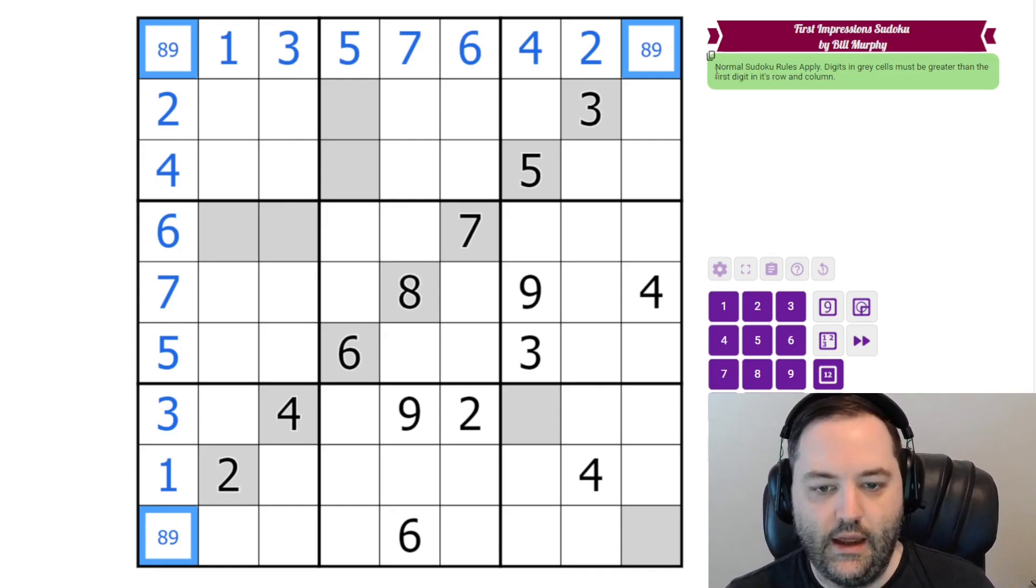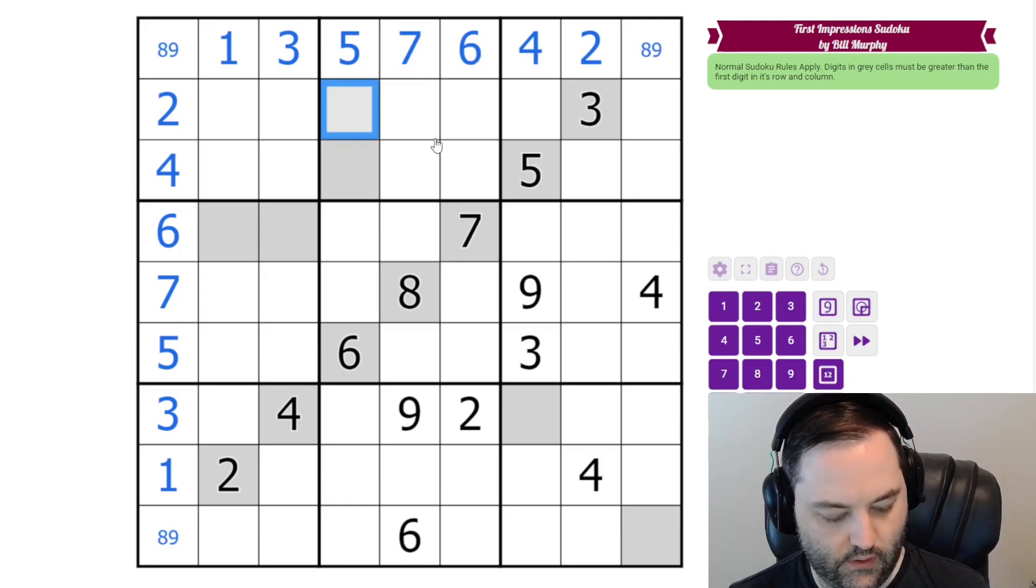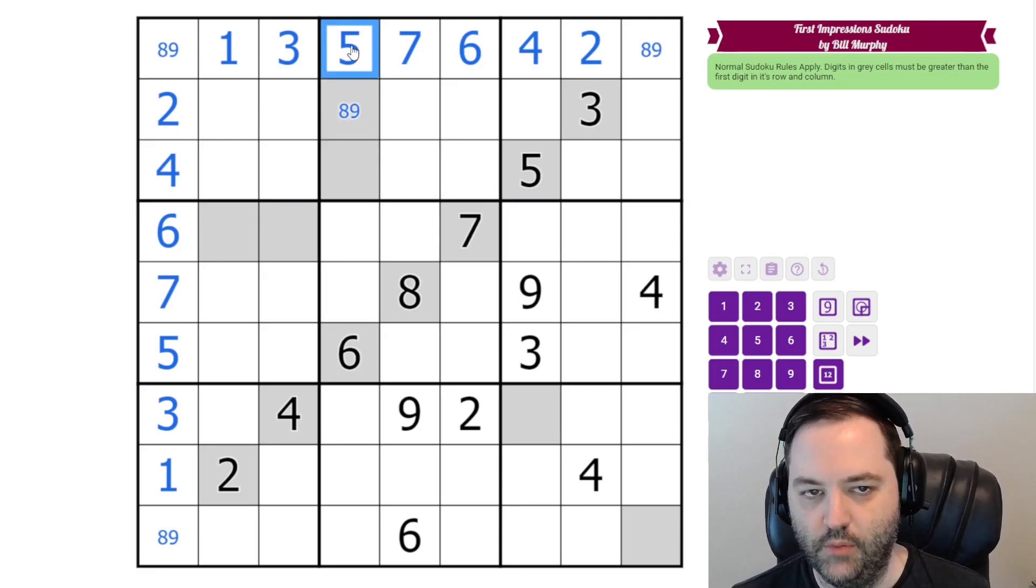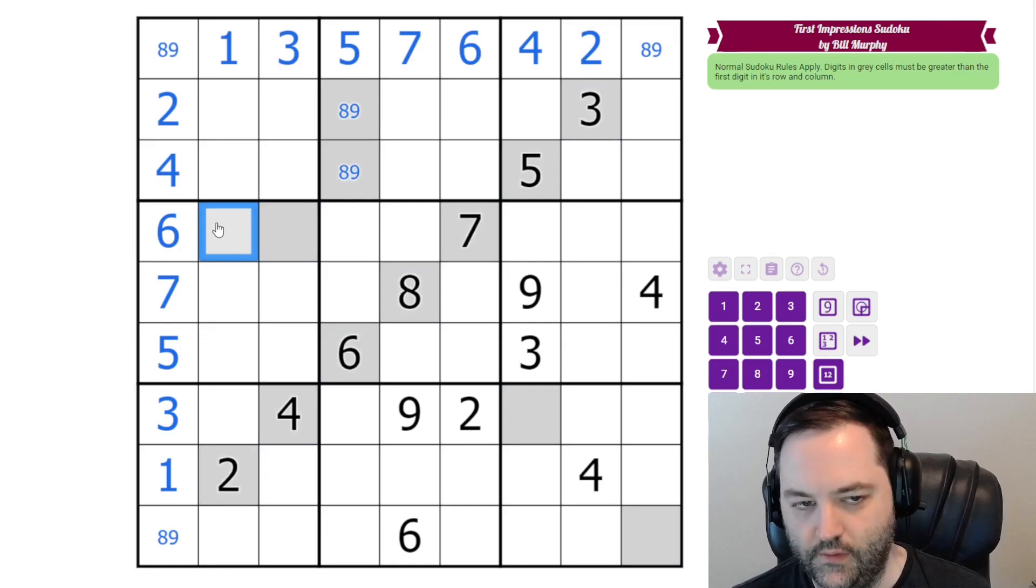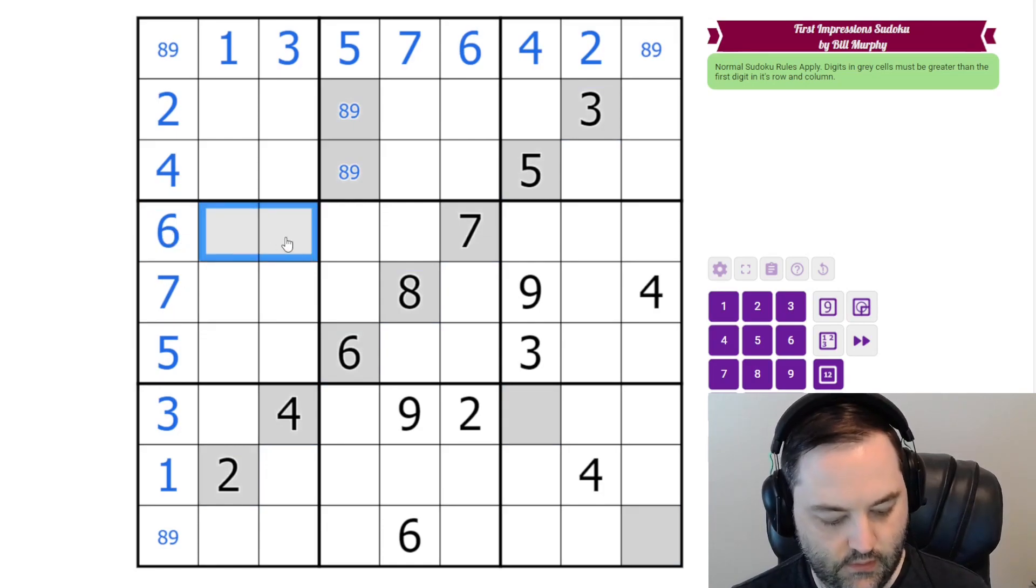Now, let's look at the other gray cells. This gray cell has to be bigger than 5, but it also can't be 6 or 7, so it is also 8 or 9. This gray cell also needs to be bigger than 5, and is also not 6 or 7. It must also be 8 or 9. These two gray cells have to be bigger than the 6. They can't be 7, so these are 8.